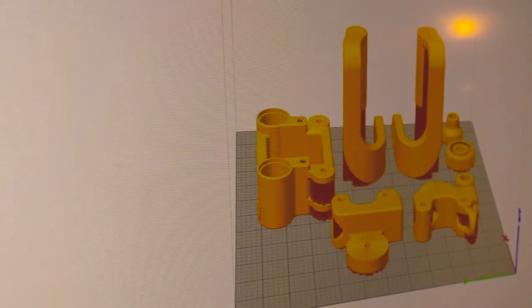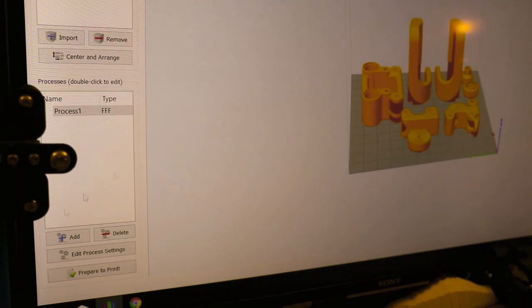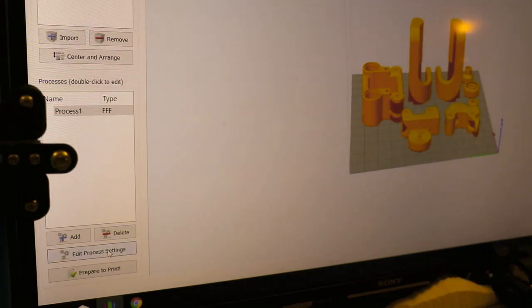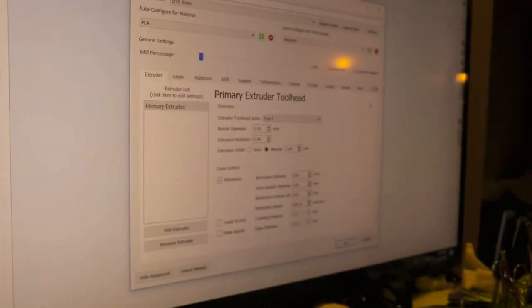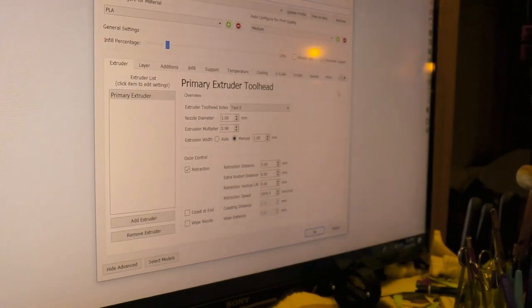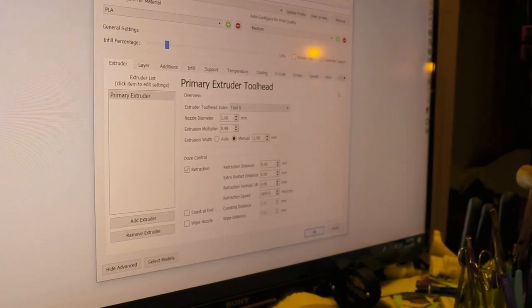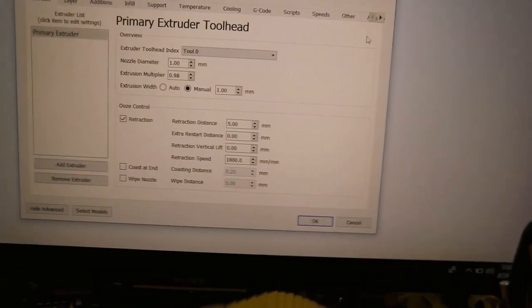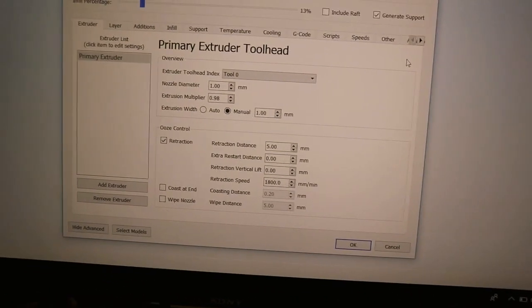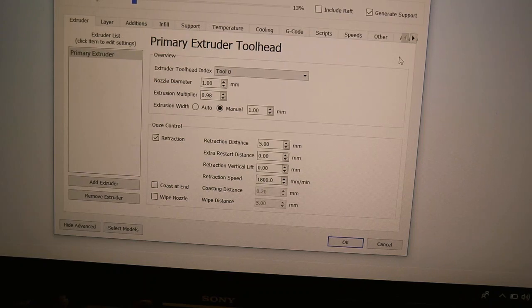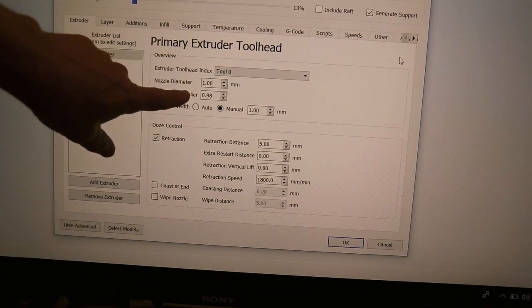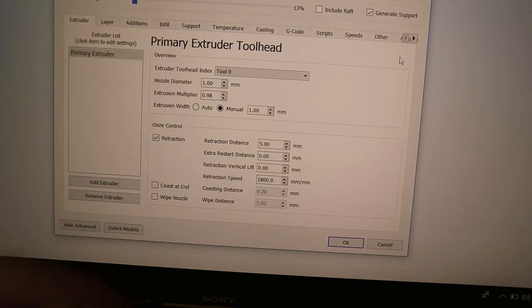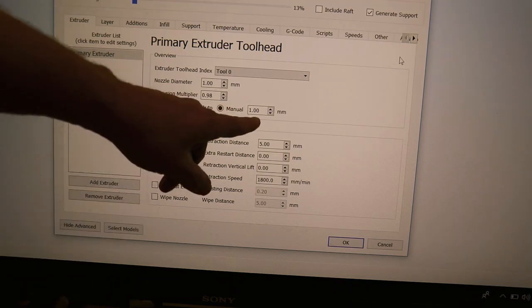We're going to go down to edit process, and it brings up our screen. Now we're not changing much here. So what are we changing? I have to change nozzle diameter, of course, that's 1. And I have to change the extrusion width because it's not going to be 1mm wide.